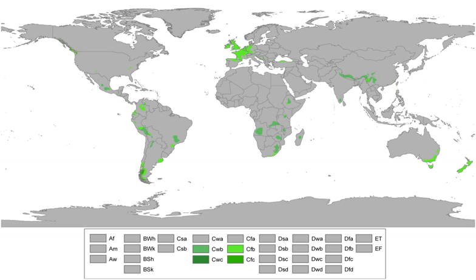The oceanic climate exists in an arc spreading across the northwestern coast of North America from the Alaskan Panhandle to Northern California, in general the coastal areas of the Pacific Northwest. It includes the western parts of Washington and Oregon, the Alaskan Panhandle, western portions of British Columbia, and northwestern California.